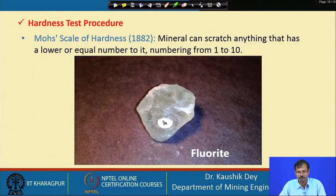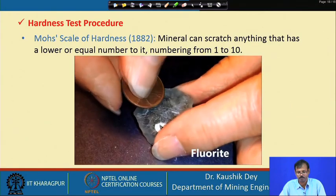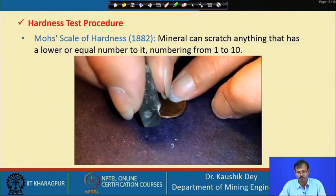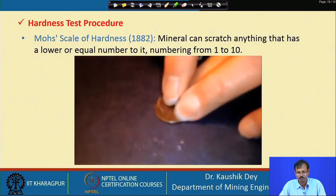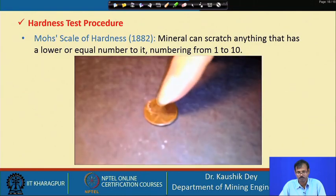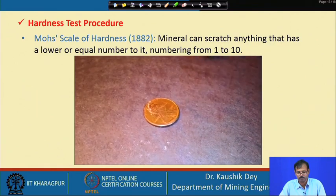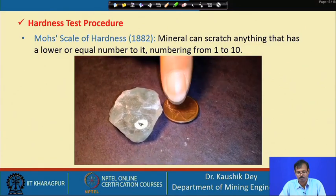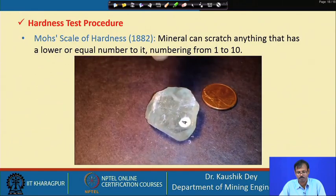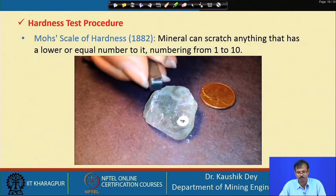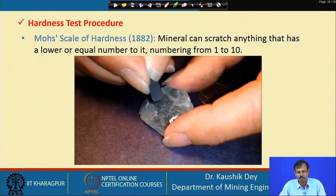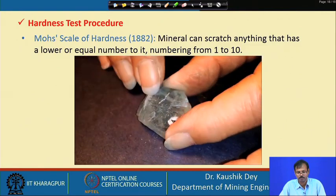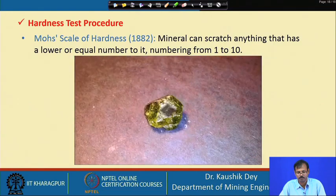Fluorite is a little harder than calcite. This time the penny will not scratch it, but if we take the fluorite, we can scratch the penny — meaning fluorite is harder than copper. We can also find something harder than fluorite: if we use a metal blade, we can actually scratch the fluorite, so the blade is harder than fluorite.